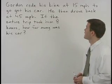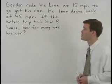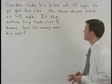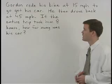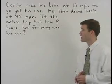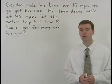Gordon rode his bike at 15 miles per hour to go get his car. He then drove back at 45 miles per hour. If the entire trip took him 8 hours, how far away was his car?